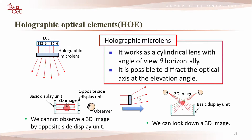It is possible to diffract the optical axis at the elevation angle. When we align the multiple basic displays in a circle to extend the viewing angle, an observer cannot observe a 3D image from the opposite side display unit. So the basic display unit displays the 3D image on a diagonal by using this feature, and we can look down at a 3D image as shown in this figure.